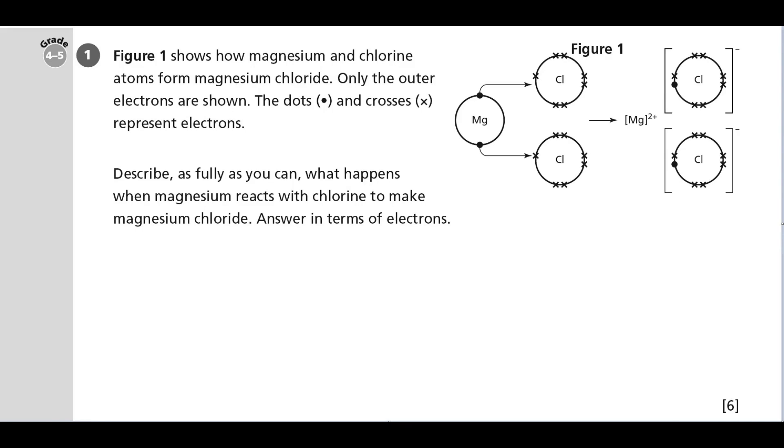Let's read the question together. Figure 1 shows how magnesium and chlorine atoms form magnesium chloride. Only the outer electrons are shown. The dots and the crosses represent electrons. Describe as fully as you can what happens when magnesium reacts with chlorine to make magnesium chloride. Answer in terms of electrons.